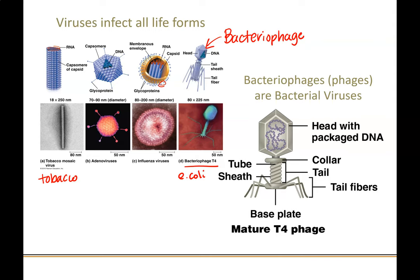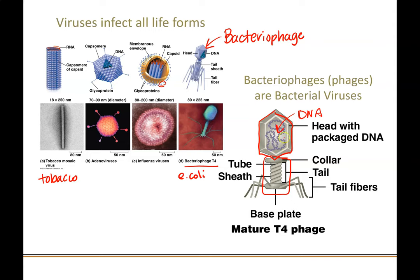The general structure of this bacteriophage, since this is what we're going to focus on, is this head or capsid — the head that contains the DNA or RNA, whatever nucleic acid it happens to contain. This one also has the collar and tail, which work to inject the DNA into the bacterial cell. And then it's got these tail fibers, almost like legs, that help it attach to the bacteria. This gives it a support system, and then it basically pumps or injects its DNA into the bacterial cell.